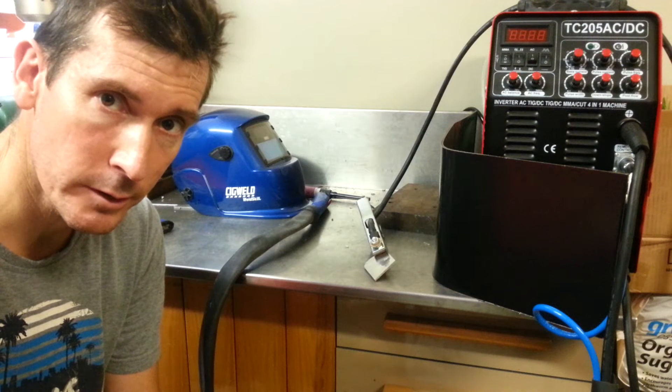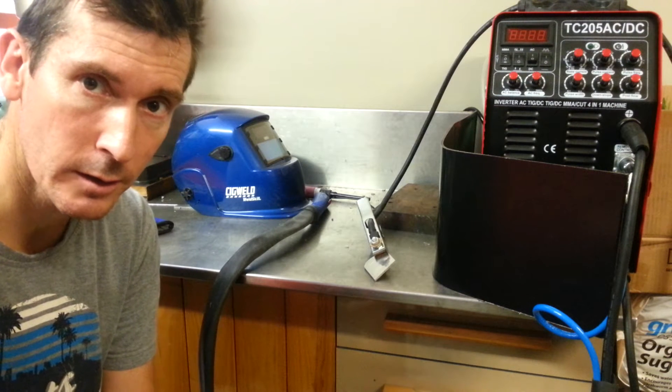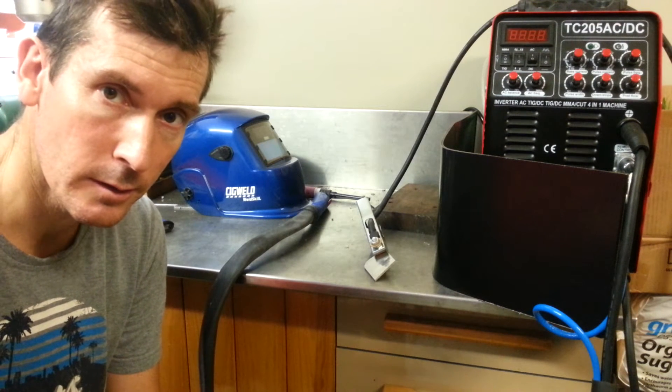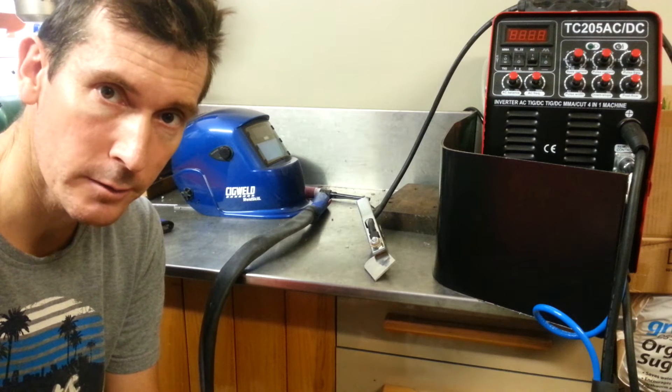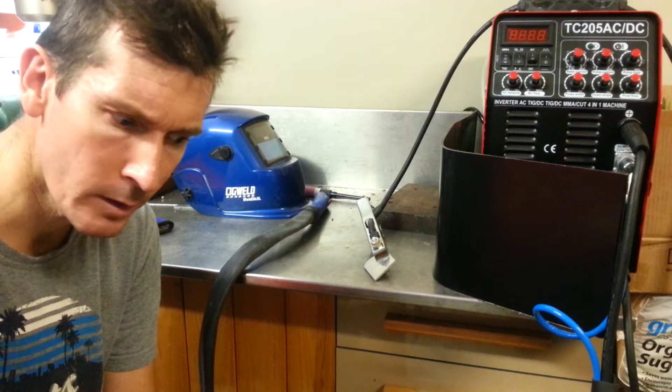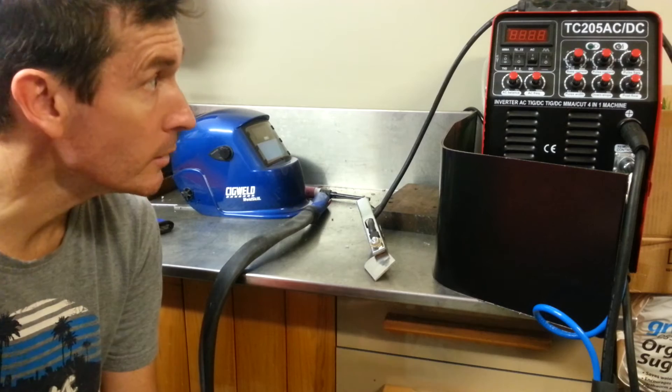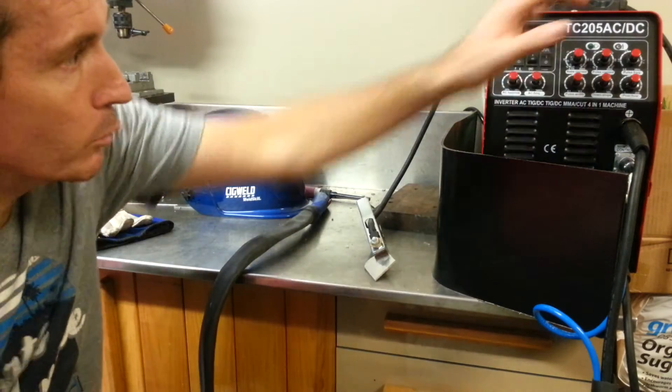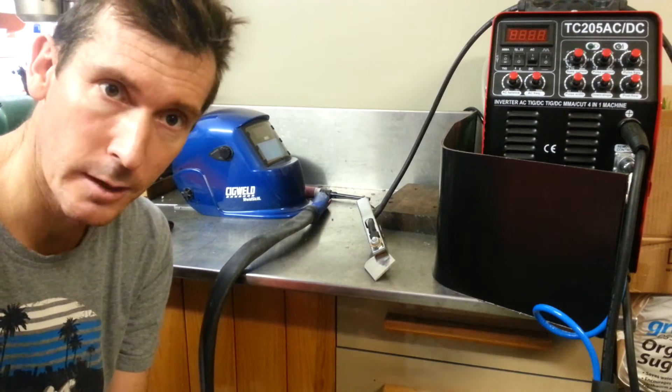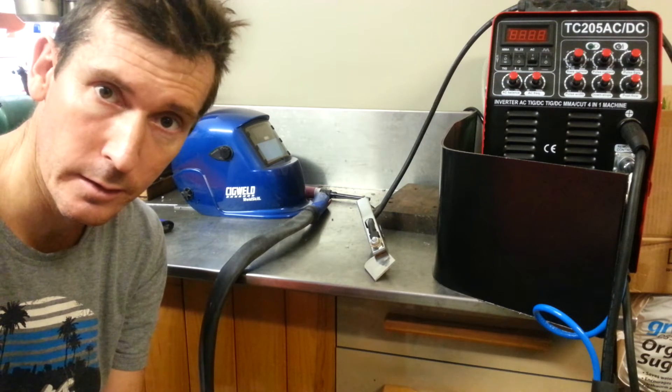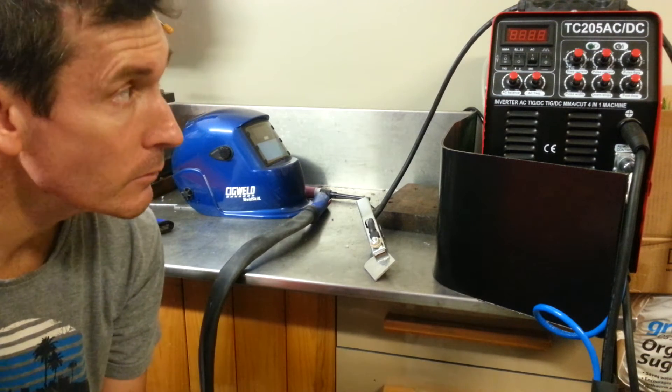It's having a lot of difficulty striking an arc, and if it does strike an arc, it's not forming a pool. The arc is very feeble, and it doesn't seem to respond to changes in input for the base current. It seems to be about the same weak strength of arc through any of the base current settings.